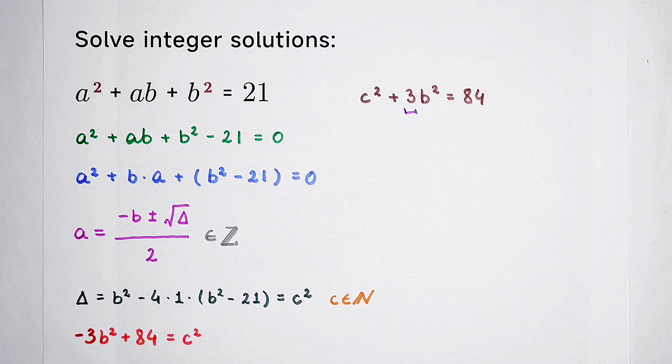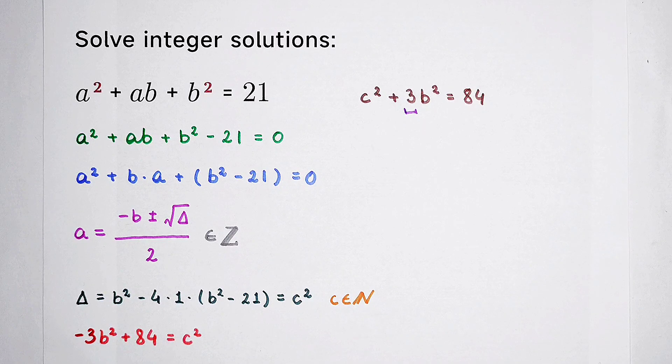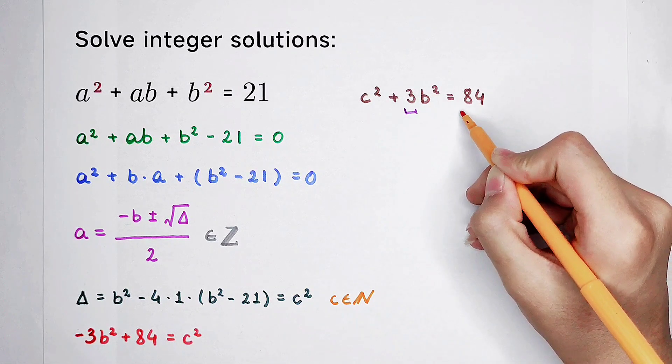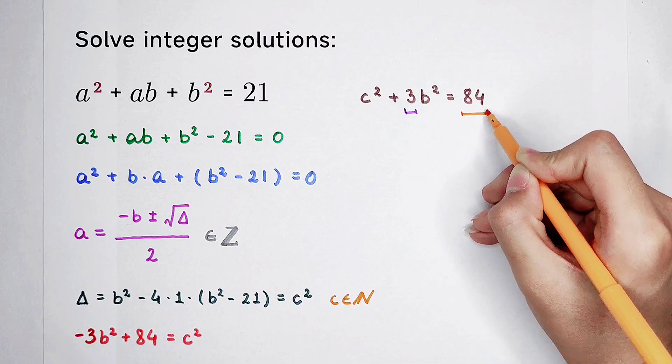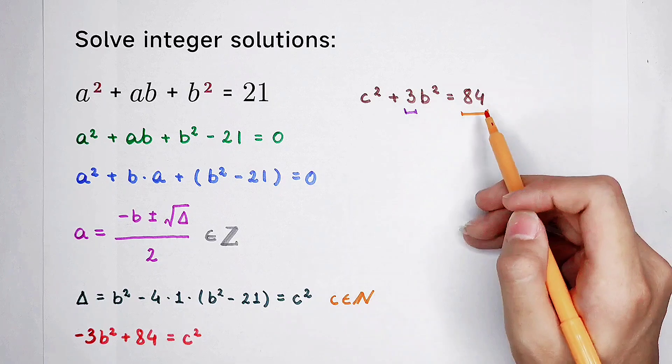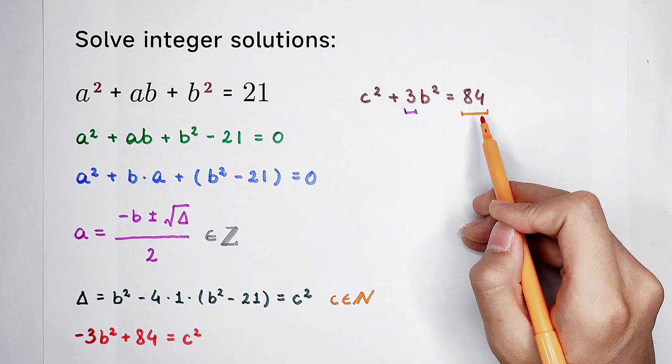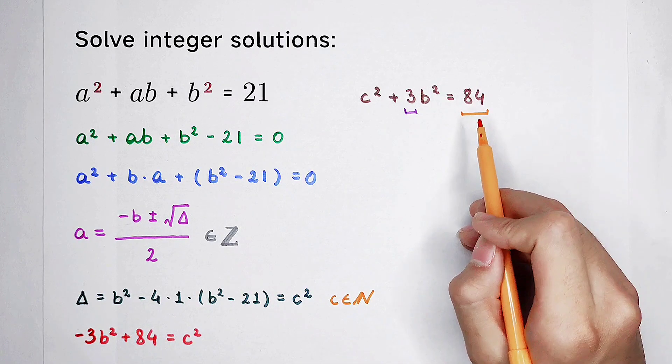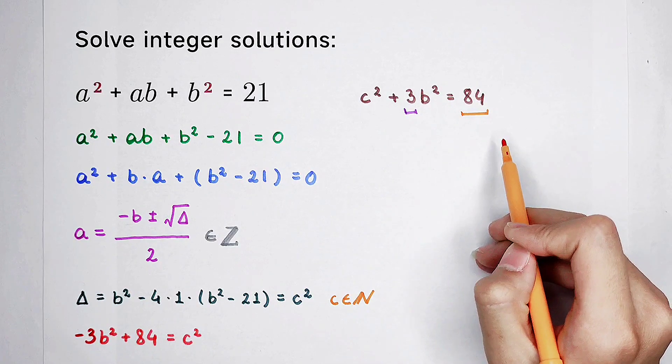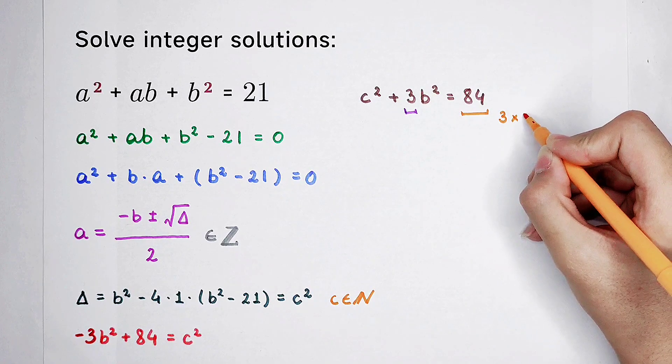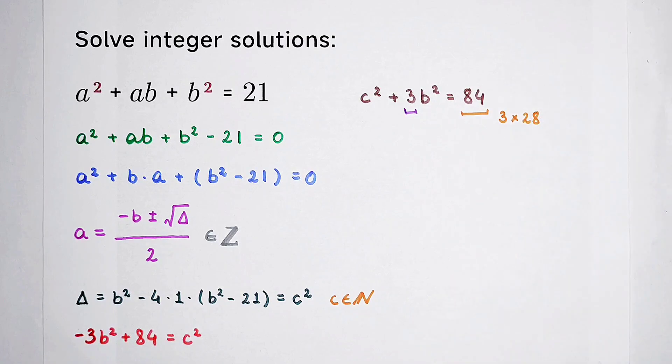So, now, we have an idea. That is, mod 3 on the both-hand sides. 84. 8 plus 4 is 12. And 12, it is divisible by 3. So, 84, it is also divisible by 3. And it is equal to 3 times 28.